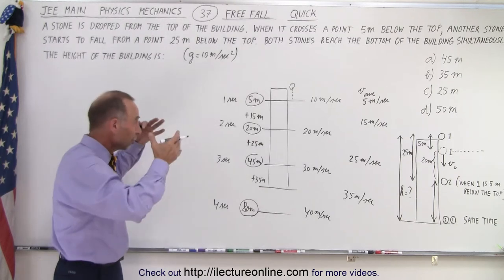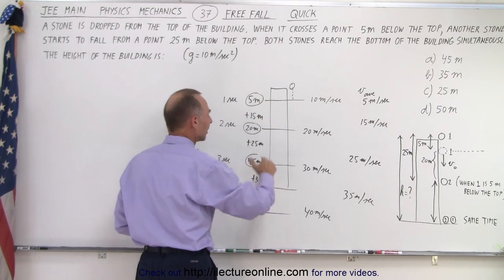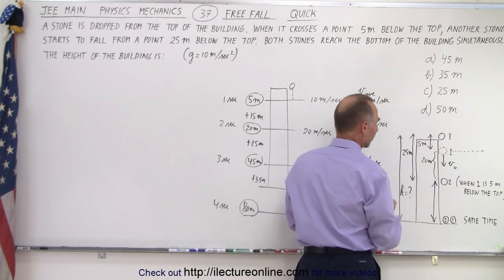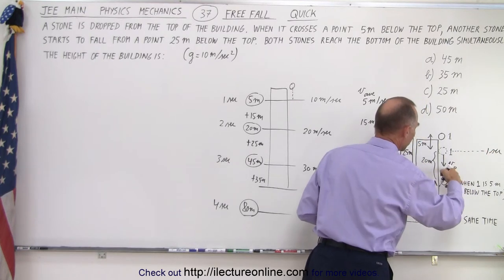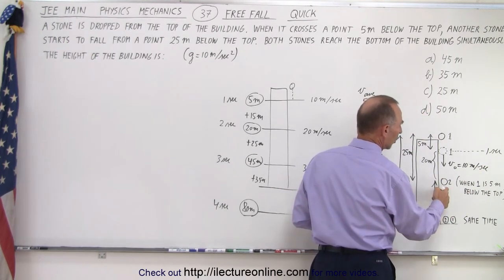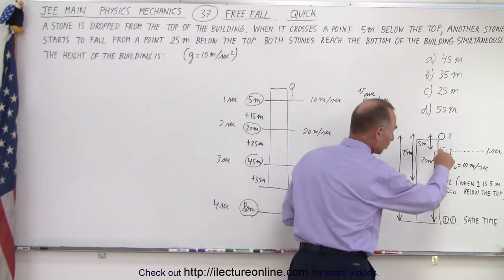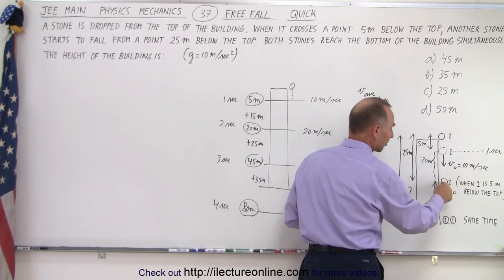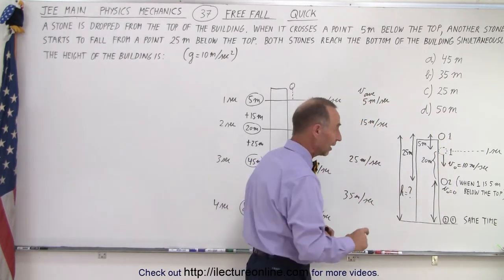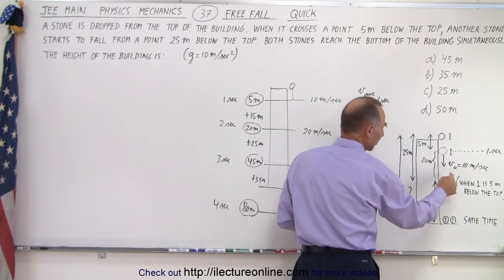So, this is something we should all have in our heads: an object will drop 5 meters, 15 meters, 25 meters, 35 meters, and so forth every consecutive second. That's why the first stone drops 5 meters in the first second — so one second has gone by, and it will now be moving at 10 meters per second — while the second rock starts with V-initial equals zero. This means the first rock will always be traveling 10 meters per second faster than the second rock, since both are now in free fall.